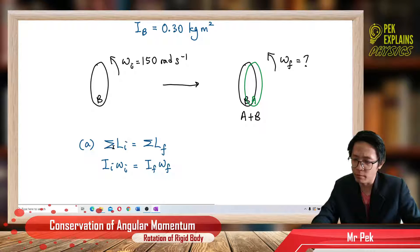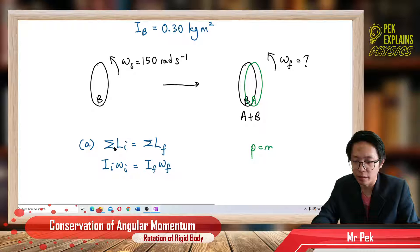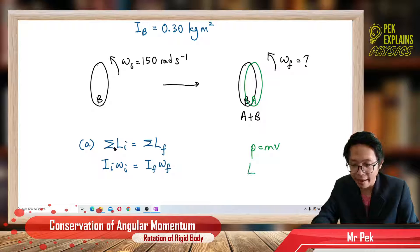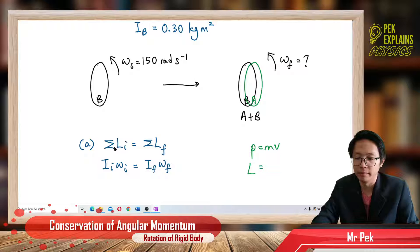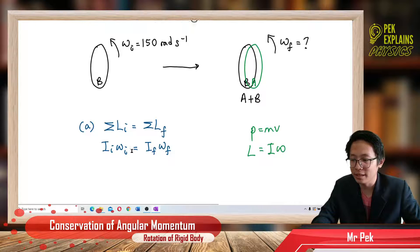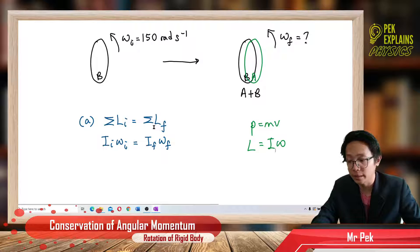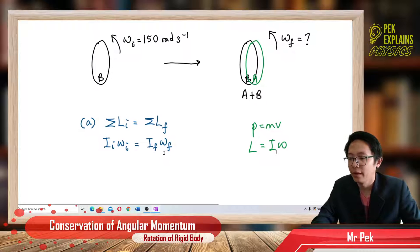In linear motion we have P equal to mV. Now in rotational motion we use L for angular momentum, where mass is like moment of inertia and velocity is like omega. So we use L equal to I omega. Total initial angular momentum equals total final angular momentum: I omega initial equals I omega final.